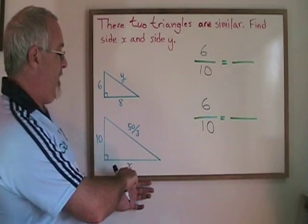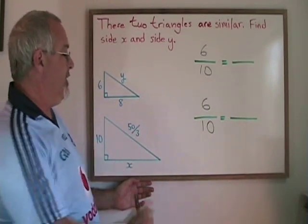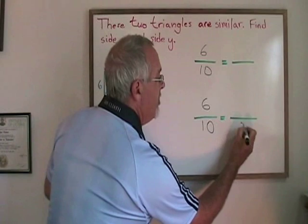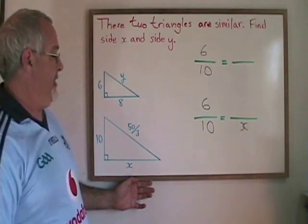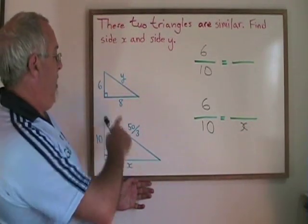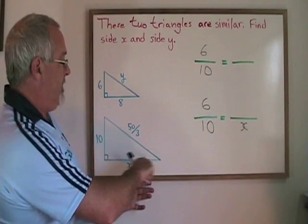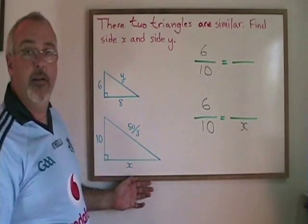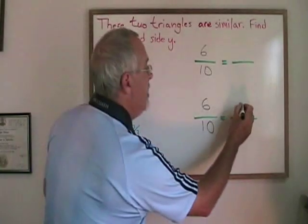To find x, x is part of the larger triangle, so the x has to go on the bottom with the 10. The side that is similar to side x in the smaller triangle is this base which is 8 units long, so the 8 goes here.